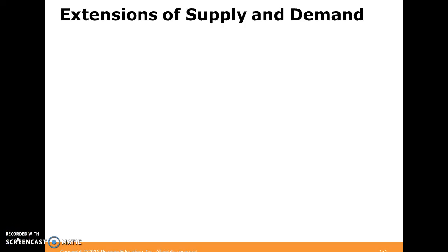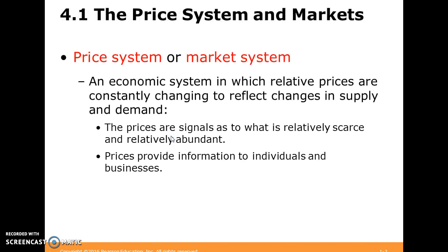Hello everyone, and welcome back. Today we're going to be continuing our discussion about supply and demand. But first we want to think about what a price system or a market system is. It's an economic system in which relative prices — prices of certain things in terms of other things — are constantly changing to reflect changes in supply and demand. This is pretty important because it allows prices to act as signals, telling us information about what is relatively scarce or relatively abundant.